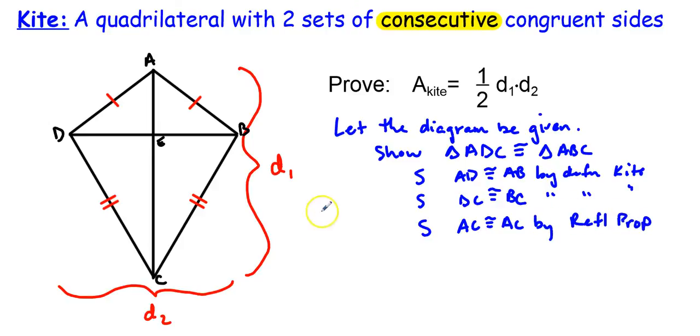So, what we just showed is that the larger triangle on the left, ADC, is congruent to the larger triangle on the right, ABC, by SSS.